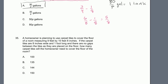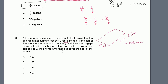Problem 35. A homeowner is planning to use carpet tiles to cover a floor measuring 9 feet by 10 feet 8 inches. Converting: 10 feet 8 inches equals 128 inches (120 + 8). So the floor is 9 feet by 128 inches. The carpet tiles are 8 inches wide and 1 foot long.